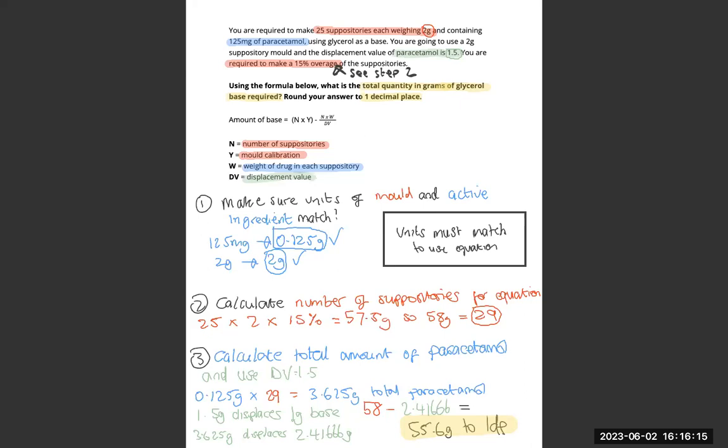We then calculate that for 3.625g which is what we need. That'll give us 2.41666.